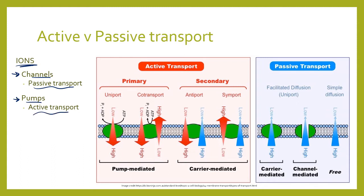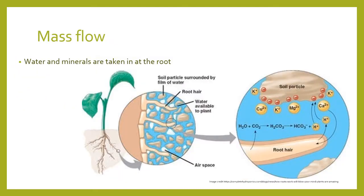There are a couple of different ways to pump ions into the root. It can be a uniport, where one protein moves ions from low to high concentration into the root. What usually happens, though, is co-transport or secondary transport, where we pump one thing out which allows something else to come in — and we'll look at that in terms of mass flow.